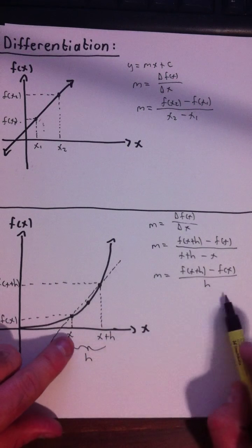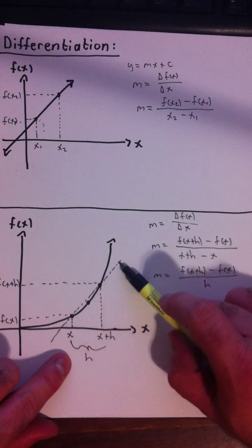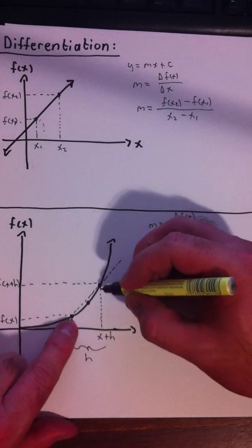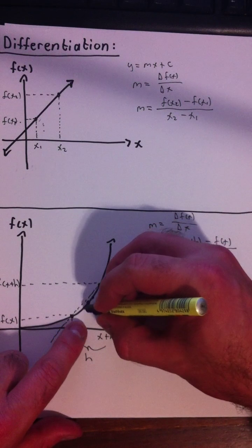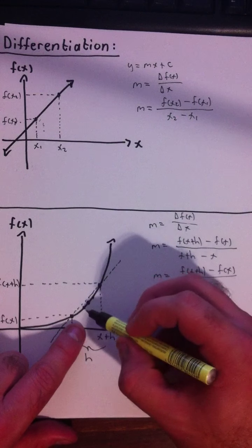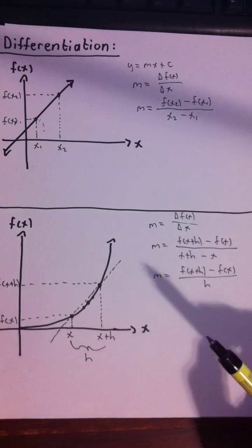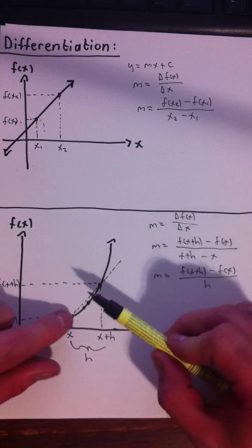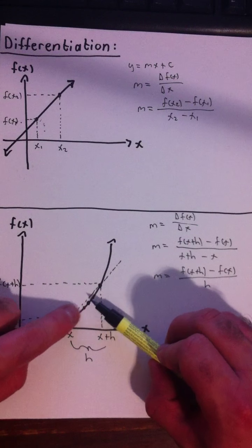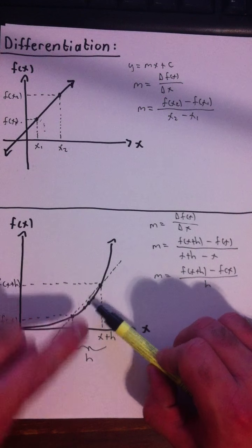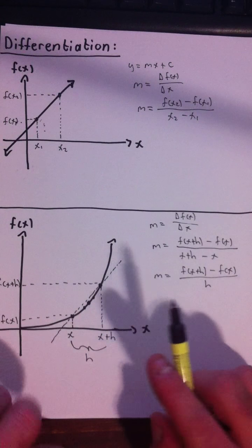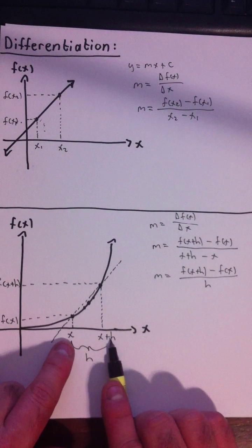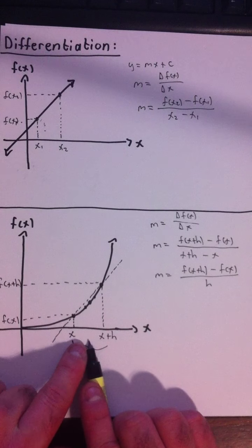But that only gives us the gradient of this straight line here. If we take these two points closer, let's say we take those two points there, and we draw a straight line through them, that'll give us a better approximation of the gradient at that point. But we need to get even closer than that to get the right answer. So we get closer and closer until eventually we're zero distance apart.